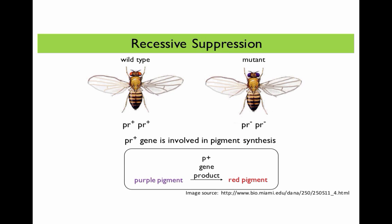The wild type purple gene is involved in pigment synthesis, and we can look at this biochemical pathway where you have a purple pigment precursor that is then converted into red pigment. The conversion from purple pigment to red pigment is carried out by the enzymatic product of the wild type purple gene. So if you are mutant for the purple gene and you don't produce a functional gene product, then the purple pigment precursor will not be converted into the red pigment, and therefore you will have flies with purple eyes.